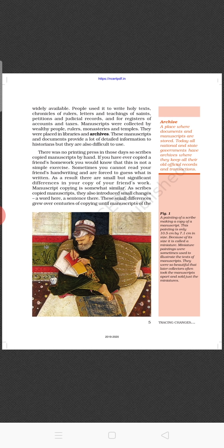There was no printing press in those days, so scribes copied manuscripts by hand. If you have ever copied a friend's homework, you would know this is not a simple exercise — sometimes you cannot read your friend's handwriting and are forced to guess what is written. As a result, there are small but significant differences in your copy of your friend's work. Manuscript copying is somewhat similar: as scribes copied manuscripts, they also introduced small changes — a word here, a sentence there — and this sometimes changed the complete meaning of the sentence.